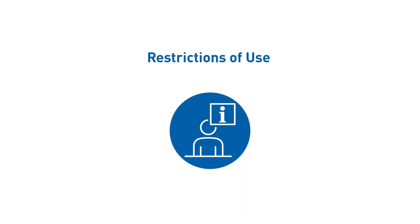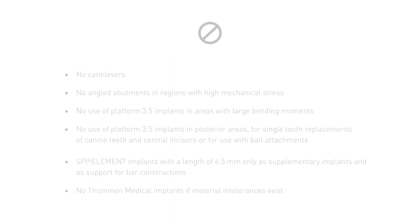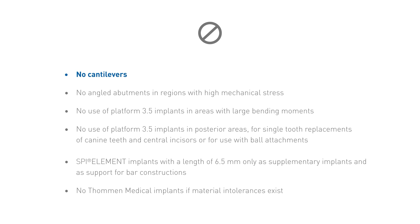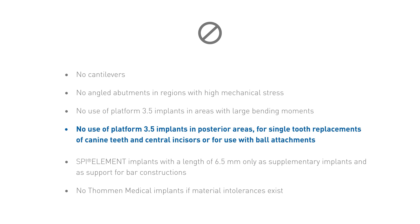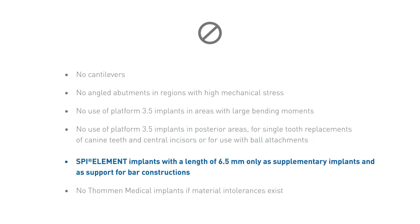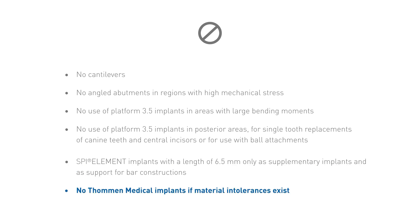Please carefully consider the following restrictions of use for the presented implant system. Tomin Medical does not recommend restorations with cantilevers. Additionally, restorations with angled abutments should not be used in regions with high mechanical stress. When placing an implant with a platform size of 3.5, areas with large bending moments should be avoided. It is further not permitted to use implants with a platform size of 3.5 in posterior areas for single tooth replacements of canine teeth and central incisors, or for use with ball attachments. Element implants with a length of 6.5 millimeters are to be used exclusively as supplementary implants in conjunction with longer implants and as support for bar constructions for full dentures in the lower jaw. Lastly, Tomin Medical implants are not indicated if intolerances to the corresponding materials exist.